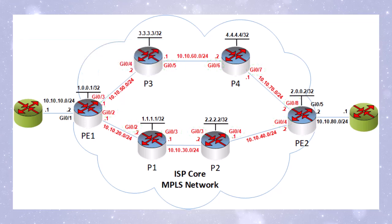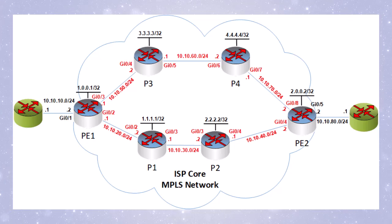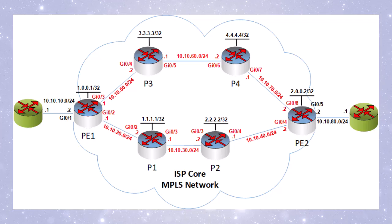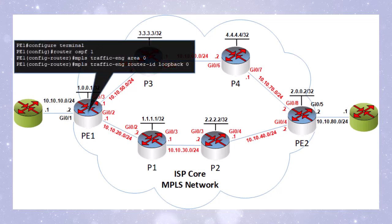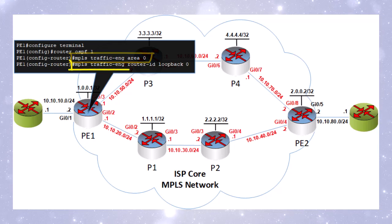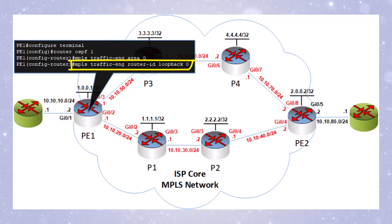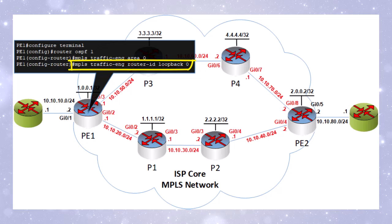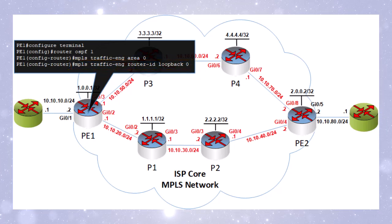Next, we'll enable OSPF traffic engineering as the underlay routing protocol. Remember, OSPF has already been enabled on these routers and the networks have been advertised. The only thing we need to do is enable traffic engineering for OSPF. Under the OSPF configuration mode, we issue the 'mpls traffic-eng area 0' command, and also the 'mpls traffic-eng router-id loopback 0' command to indicate that we're using the IP address of loopback zero as the OSPF TE router ID.